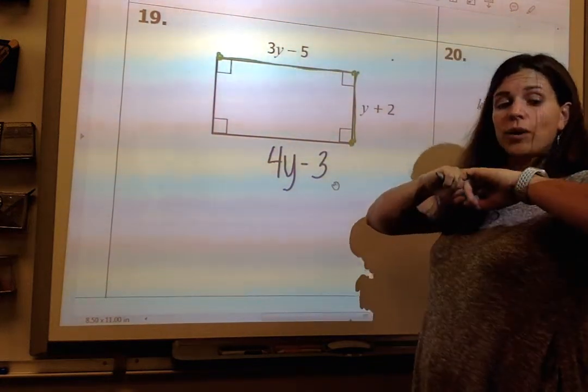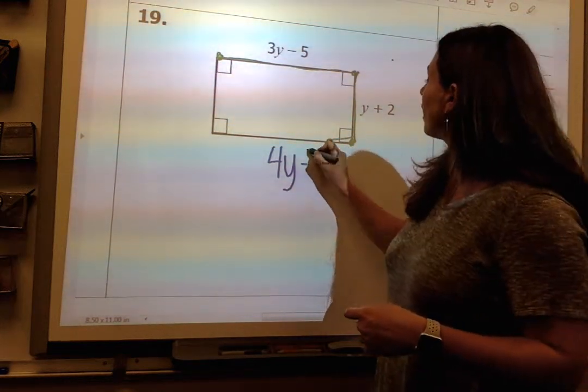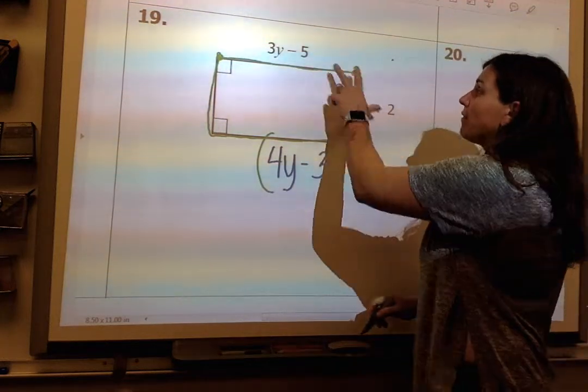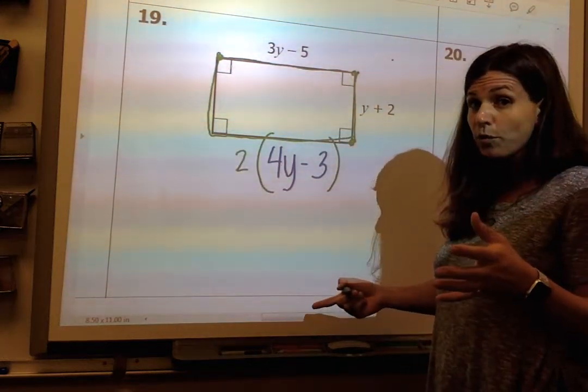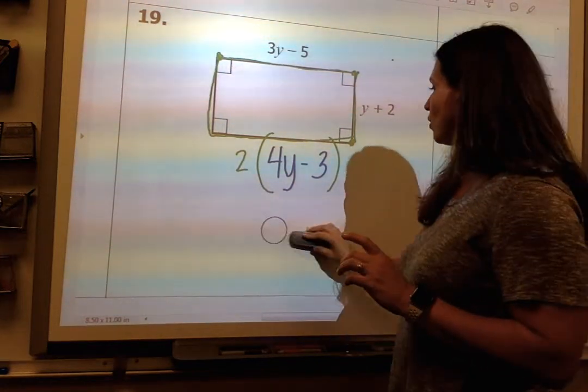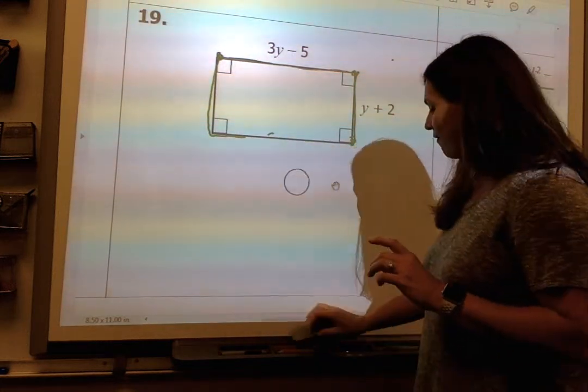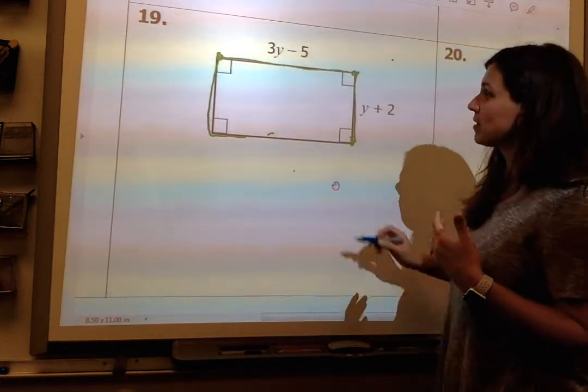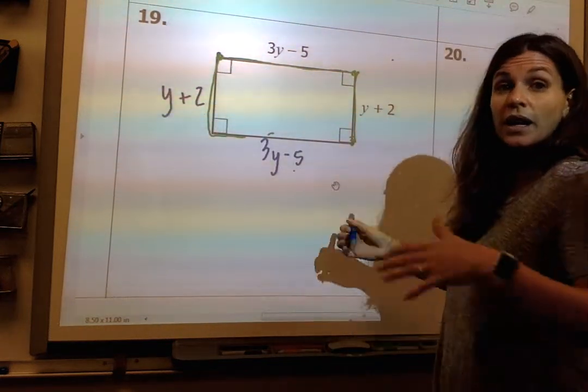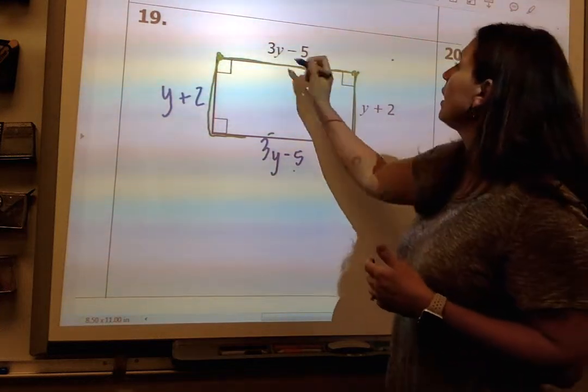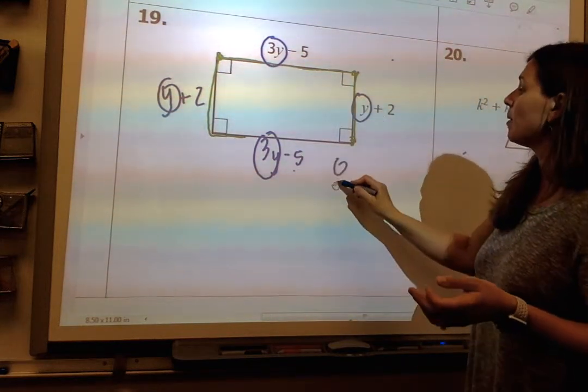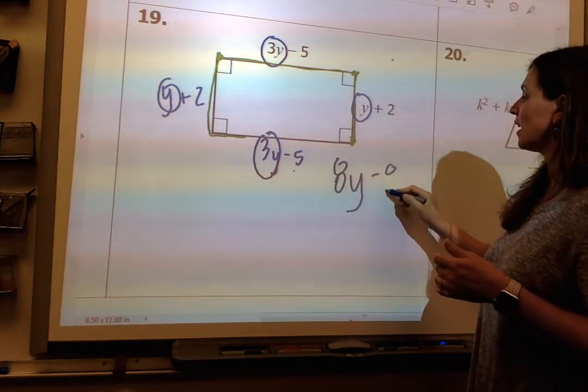Perimeter is the distance around the whole shape. So I need to either, one of two ways. I can multiply half this distance by 2 and use the distributive property to get 8y minus 6. Or what I can do is, I know that a rectangle opposite sides are equal. I have 3y minus 5 here, and I have y plus 2 here. And then I can do what I've done on 19 and then 18 above and just circle my like terms. Whatever way works for you is fine. Like, I'm still going to get 8y, and I'm still going to get negative 6.